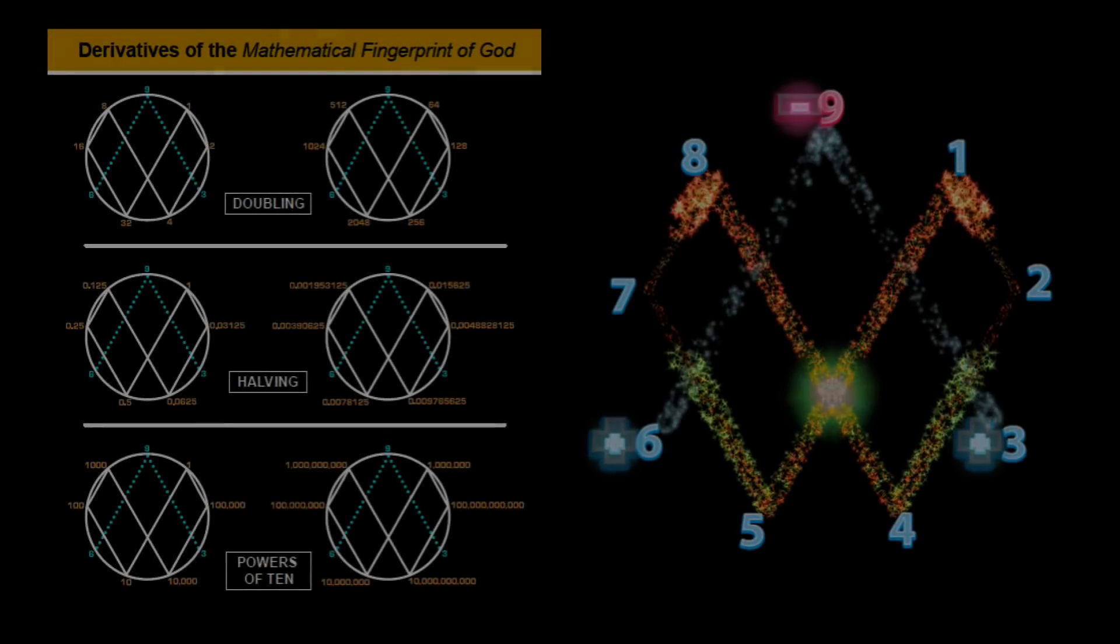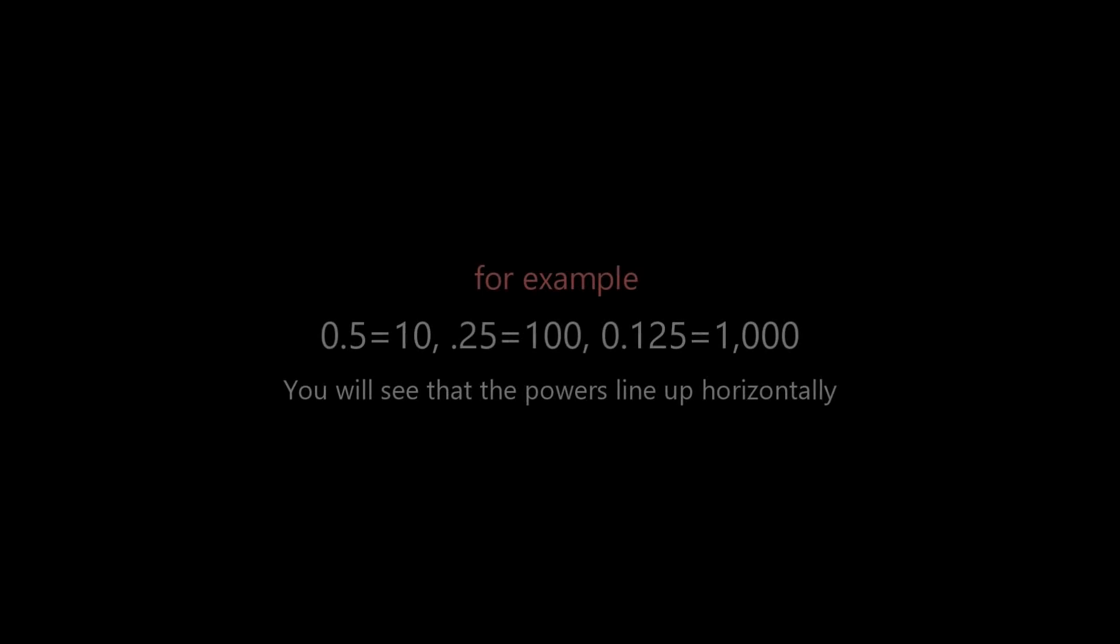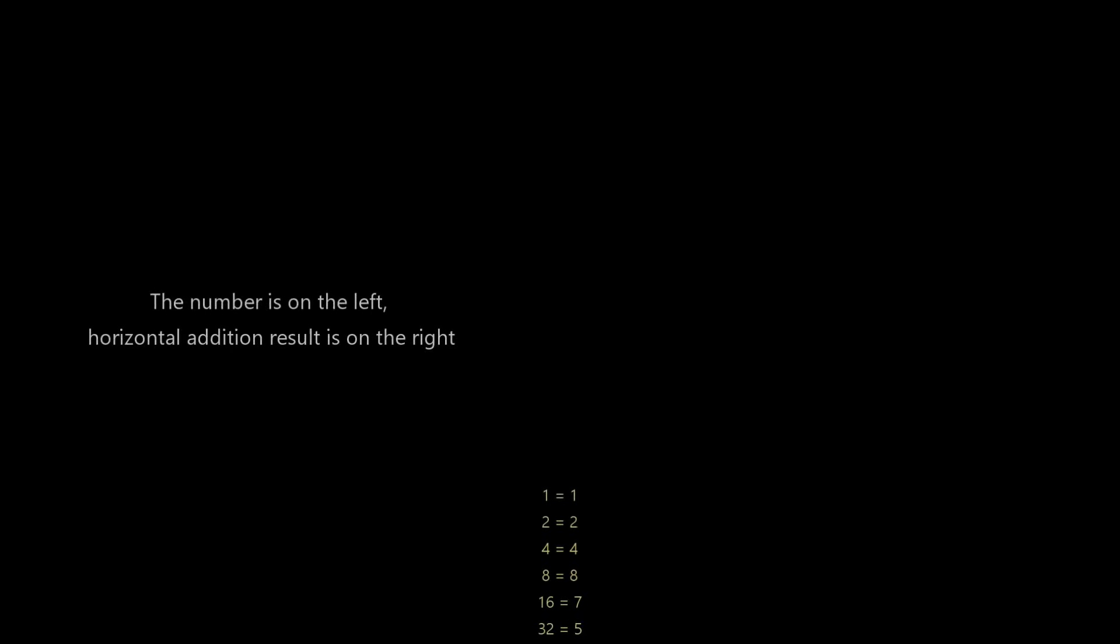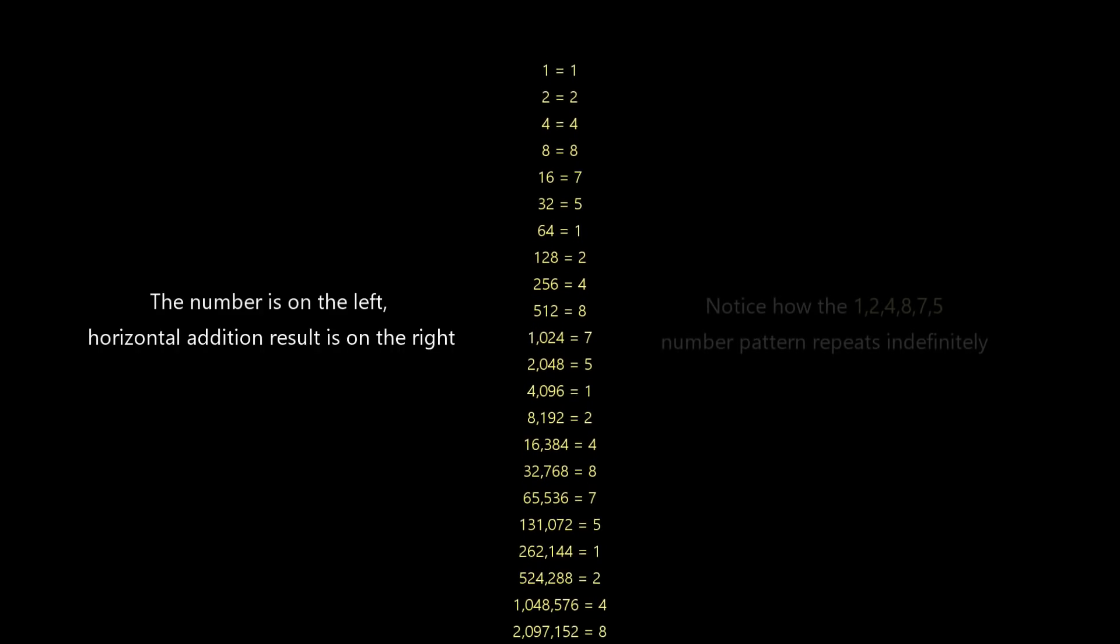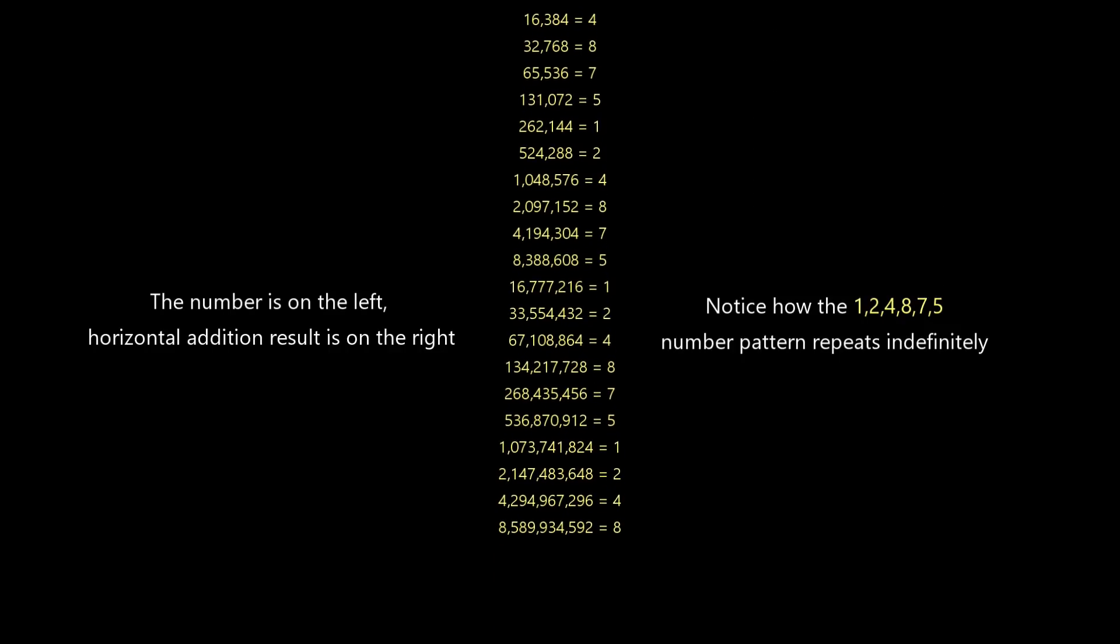The powers of 10. As you replace the decimal numbers with their power, for example, 0.5 equals 10 to the power, 0.25 equals 100, 0.125 equals 1000, you will see that the powers line up horizontally. The number is on the left, horizontal addition result is on the right. Notice how the 1, 2, 4, 8, 7, 5 number pattern repeats indefinitely.